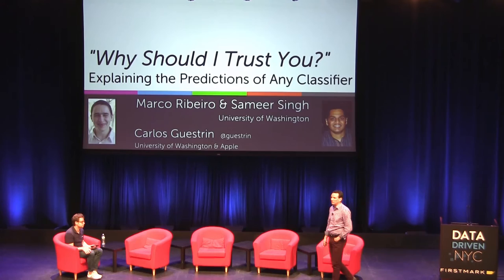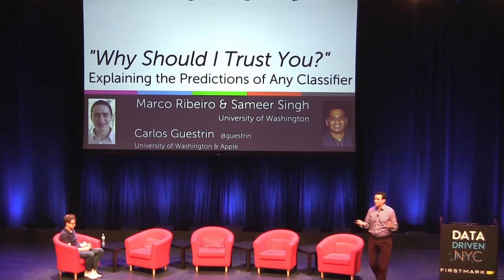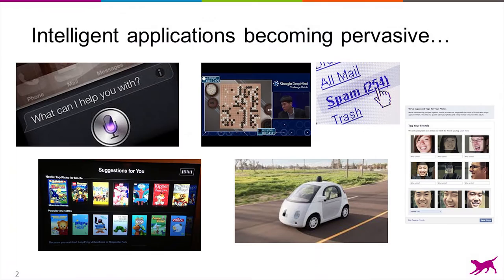You might not have heard this, but I'm going to tell you some incredible secret now: machine learning is hot. You see area after area being disrupted by what I call intelligent applications — applications that use machine learning at its core, that are differentiated by what they do with their data. And that's really exciting.